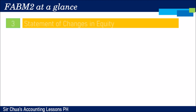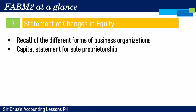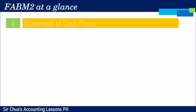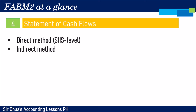After the income statement, we will cover the statement of changes in equity, or capital statement. We will recall the different forms of business organizations and prepare a capital statement for sole proprietorship, with an introduction to partnership and corporation capital statements. We will also cover the statement of cash flows using the direct method at a senior high school level, and introduce the indirect method as well.